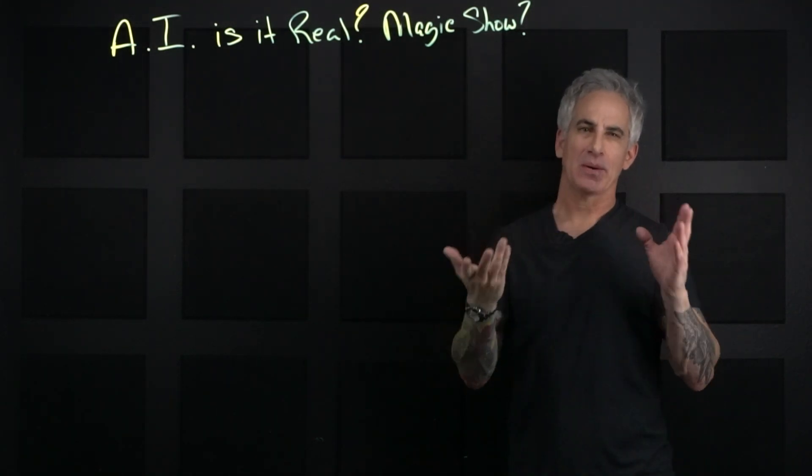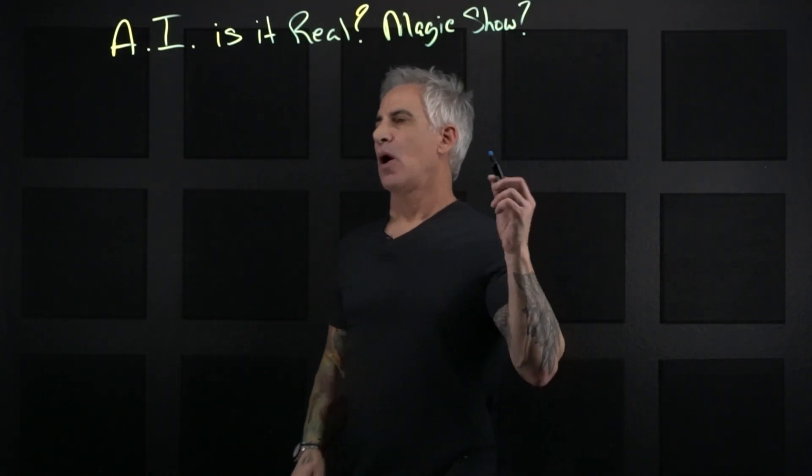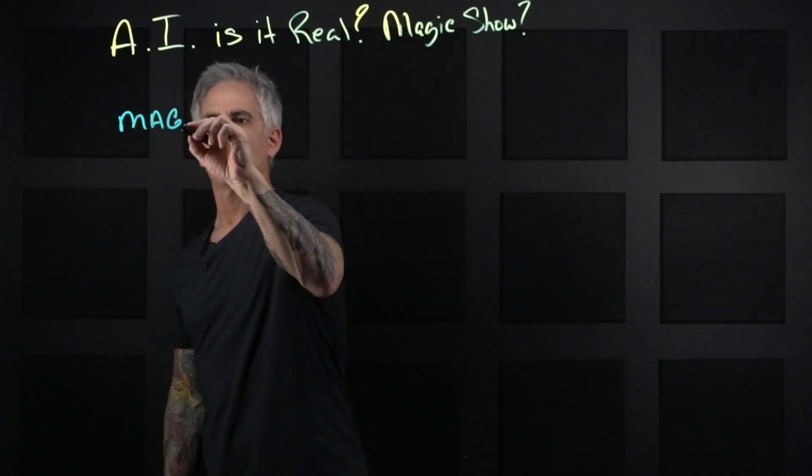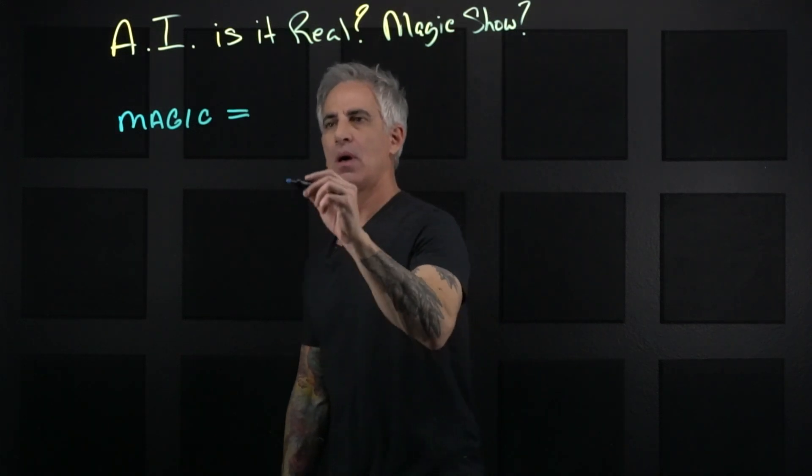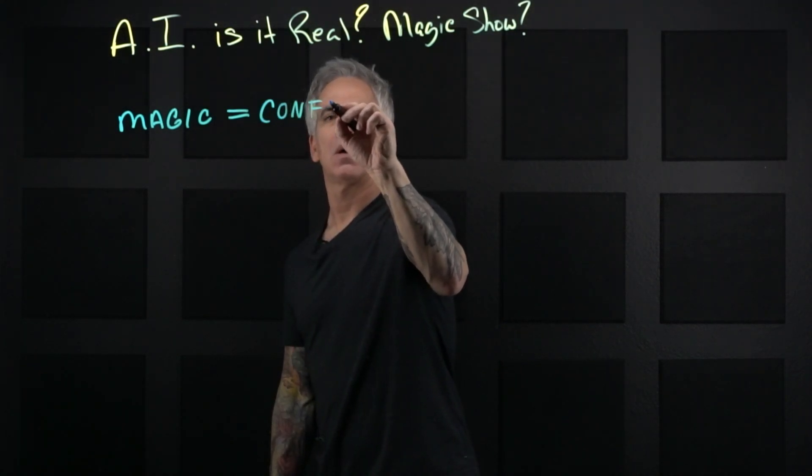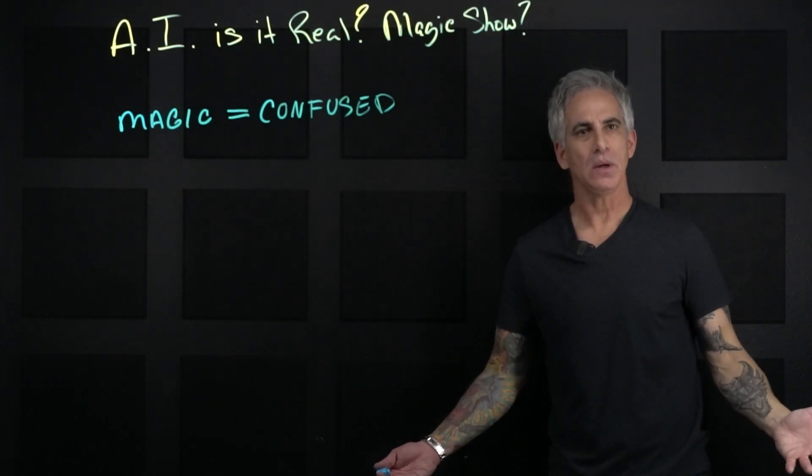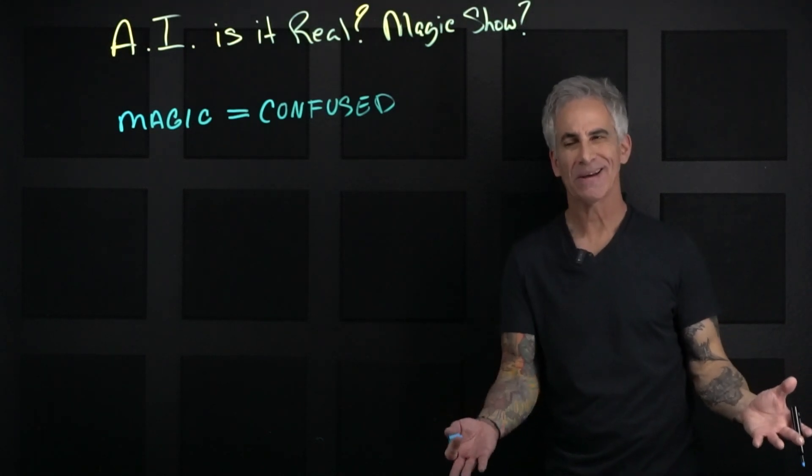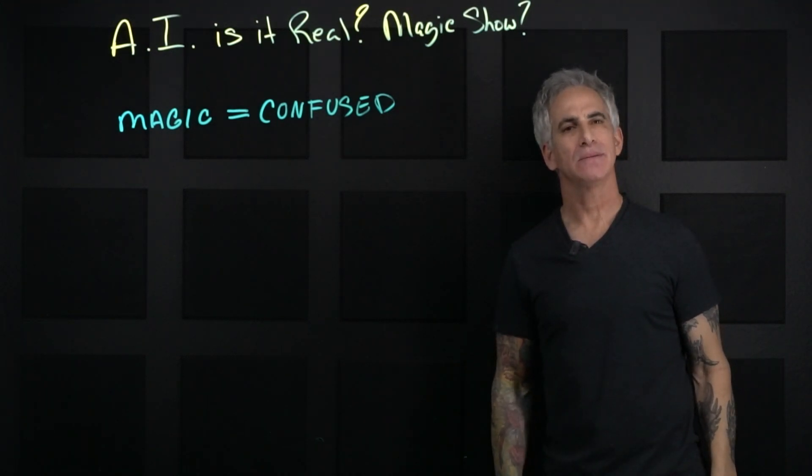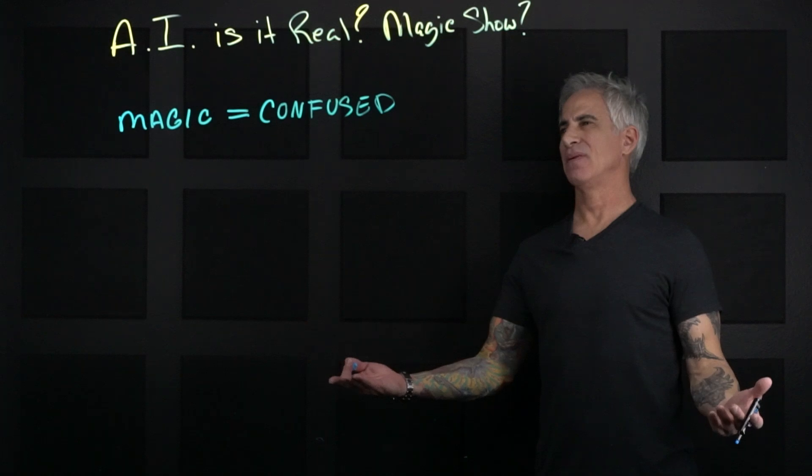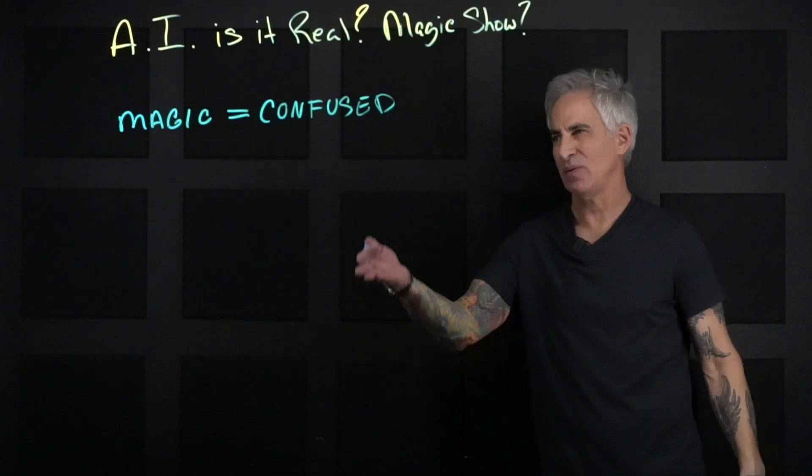Now, you may not understand what I mean by magic show, so let me explain. I'll draw a picture for you. The magic show equals confused. How do you do it? What the fuck's going on? Where'd it go? That's what it is. Misdirection. They say, well, what could artificial intelligence possibly have to do with a magic show?